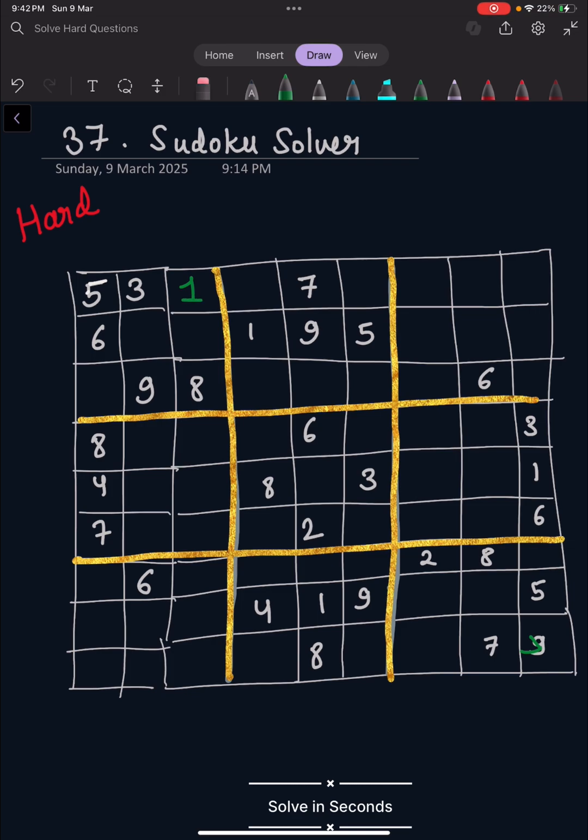So we will try two. Till this point it will look like this, but now if you see here we can't fill one, two, three, four, five, six, seven, eight, or nine. It means the value we have filled here is wrong.